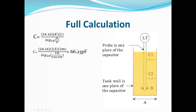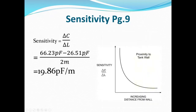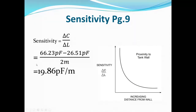The sensitivity formula is the change in capacitance over the change in length. With a full capacitance value of 66 picofarads and an empty value of 26 picofarads, subtracting those two and dividing by the 2-meter probe length gives a sensitivity of 19.86 picofarads per meter.